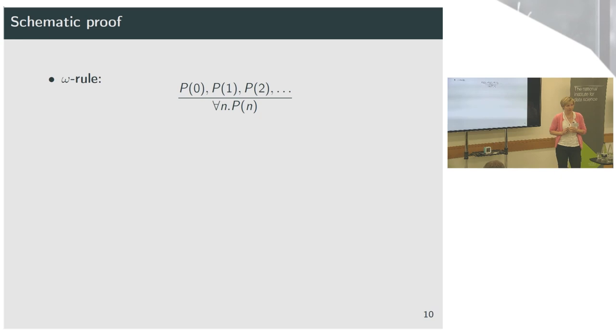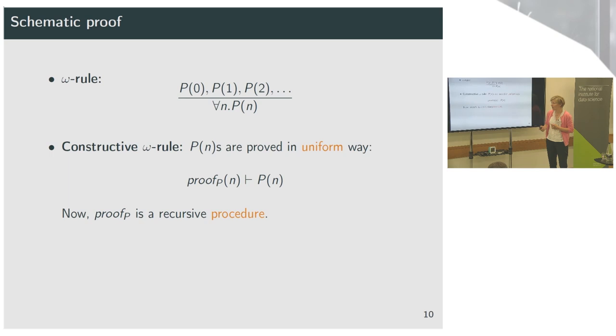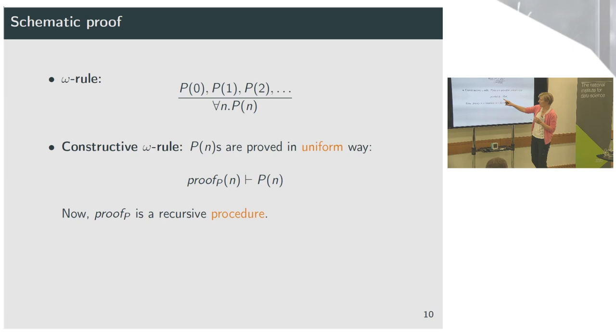So I propose a solution to dealing with this problem of abstraction to use schematic proofs. Now, what are schematic proofs? First of all, they use a version of omega rule. And what is an omega rule? Well, it's this. If I can show all the premises for any number, then I can conclude the universal statement. Obviously, if I'm trying to automate this, that means I have to prove an infinite number of premises, which is no good for automation. So I have a problem here. So the solution is to use the constructive version of the omega rule, where all p n's are proved in a uniform way. And what does it mean in a uniform way? So I get a program for my premise p for a particular variable that proves that premise.